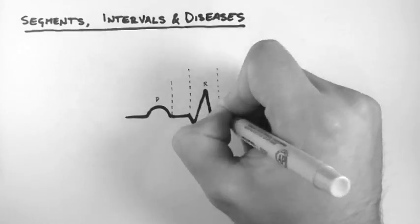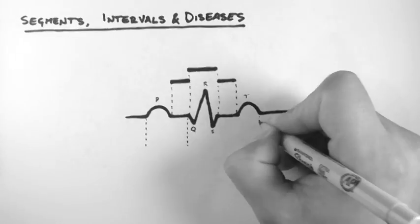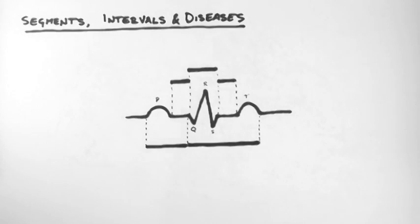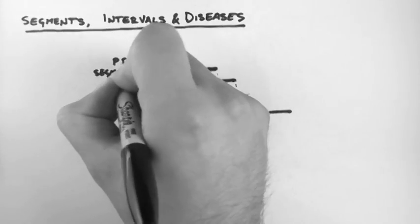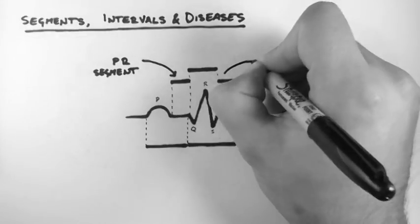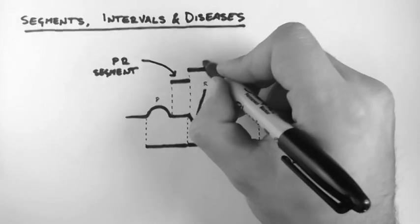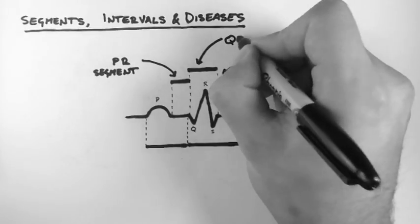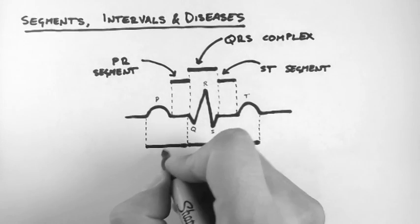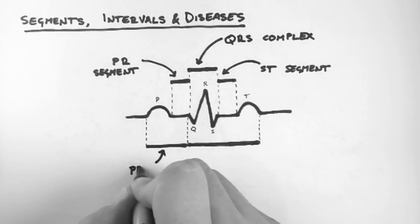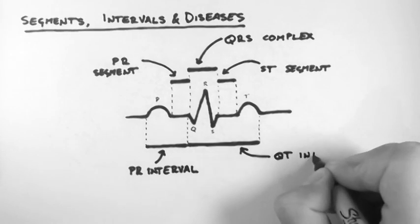And now I'm going to split the ECG up into its segments and intervals. This is the PR segment. This is the ST segment. And between them is the QRS complex. Down here we have the PR interval and the QT interval.